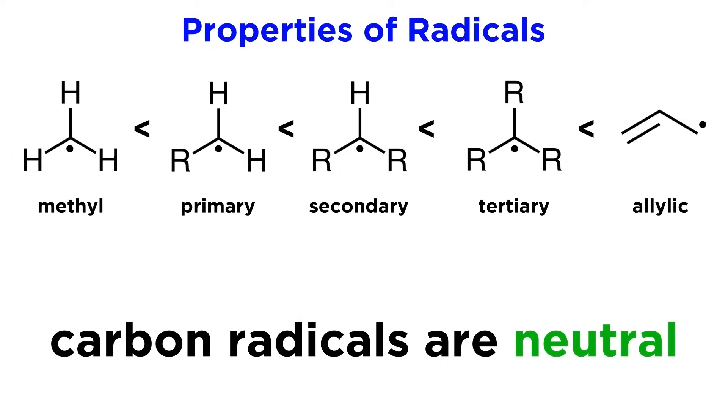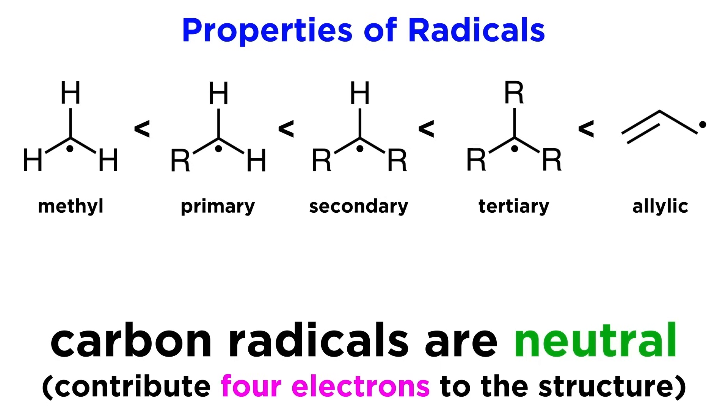However, we should note that unlike a carbocation, a carbon radical does not indicate a formal charge. The carbon that bears the radical is still contributing 4 electrons to its Lewis structure, which is the same as its valence, so it is a neutral atom. It is simply that the electron is unpaired.